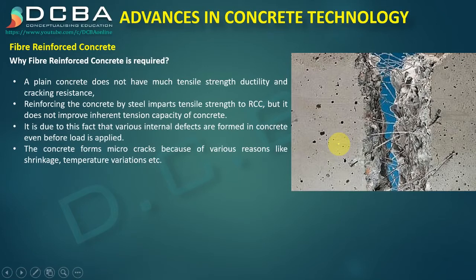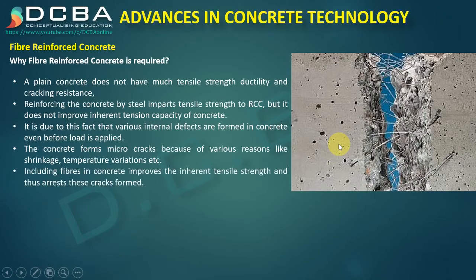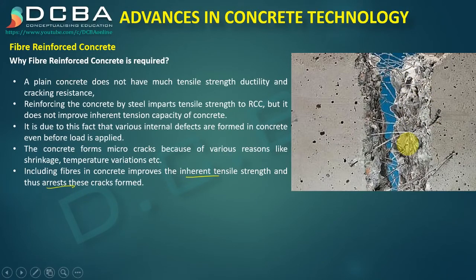Shrinkage and temperature variations create a lot of tensile stresses within the body of concrete, and because of them, many micro cracks are created inside. So what if our concrete was able to resist those tensile forces? That is basically done using fibers. When we include fibers in concrete, it improves the inherent tensile strength and arrests the cracks that are formed.